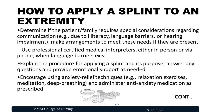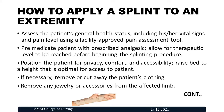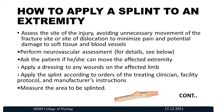Encourage anxiety relief techniques such as relaxation exercises, deep breathing, and meditation. Anxiety medications may also be given. Assess the patient's general health conditions, vital signs, and pain; administer prescribed analgesics before beginning the splinting procedure. Position the patient for privacy, comfort, and accessibility. Raise the bed to an appropriate height; if necessary, remove or cut away the patient's clothing and remove any jewelry or accessories from the affected limb. Assess the site of injury, avoiding unnecessary movement, to minimize pain and potential damage to soft tissues and blood vessels.